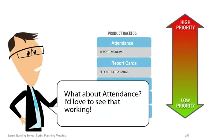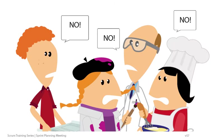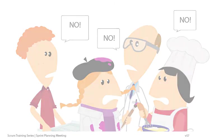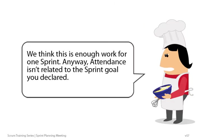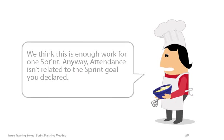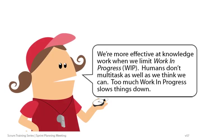This team used the whole time box to come up with the sprint backlog because it's one of the first sprints. If we keep the same team together and keep the sprint length constant, they'll eventually develop a better intuitive sense of their own capacity. What about attendance? I'd love to see that working. We think this is enough work for one sprint — anyway, attendance isn't related to the sprint goal you declared. We're more effective at knowledge work when we limit work in progress, or WIP. Humans don't multitask as well as we think we can. Too much work in progress slows things down.